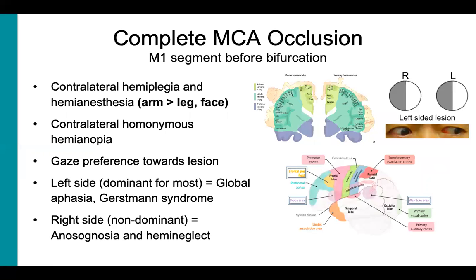If the MCA stroke is on the non-dominant hemisphere, which is the right side for most people, the patient may exhibit anosagnosia and hemi-neglect. Anosagnosia is when the patient lacks insight about their neurological deficit — they are unaware of their condition and unable to accept it. Hemi-neglect is when the patient seems to ignore a hemisphere of their world, the side opposite the lesion. They are not aware of items nor do they respond to stimuli on one side of space. If you ask a patient with neglect to draw a clock, they might just draw half of a clock. These patients have even been known to ignore or disown their own limbs. This is different from hemianopia, which involves problems with the visual system — hemi-neglect is a problem relating to attention to one side and has nothing to do with the visual system. So that's it for a proximal M1 segment occlusion.